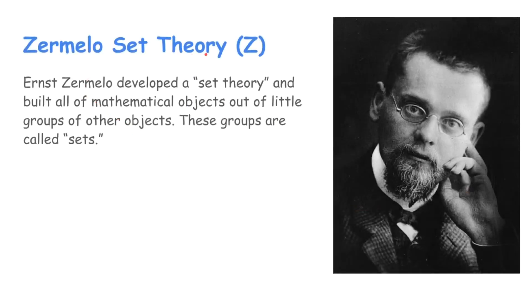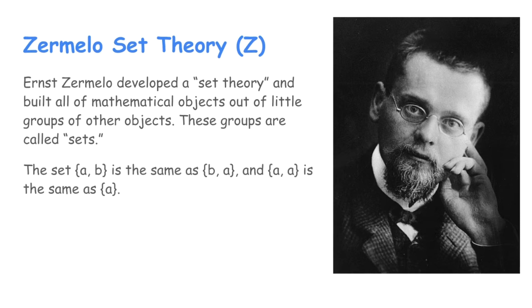So he developed Zermelo's set theory. Here's Zermelo right here. He looks really creepy and he's doing something weird with his hand on the left side of his face. So he developed a set theory which he built all of mathematical objects out of - natural numbers, real numbers, pretty much all of the mathematics we've ever done so far, group theory, all of that stuff. He made it out of little collections of other objects, little groups of other objects, and he called these sets. Although he didn't name it actually, it was named a while before him. But these groups are called sets.